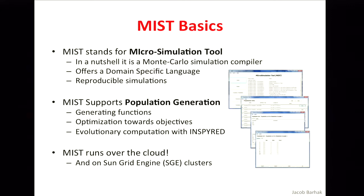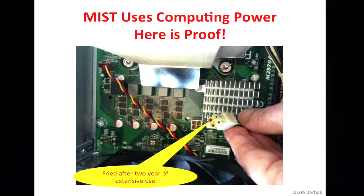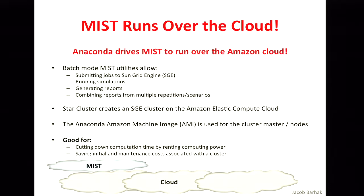MIST also runs over the cloud — I want you to remember this catchy phrase. It uses quite some computing power. This is an eight-core machine that I had that, after about two years of use, got fried — this is a real picture from a few weeks ago. But MIST can also run over the Amazon EC2 cloud. To run over the cloud, it uses software called Star Cluster. Star Cluster creates a virtual cluster on the Amazon cloud from the command line very, very easily.